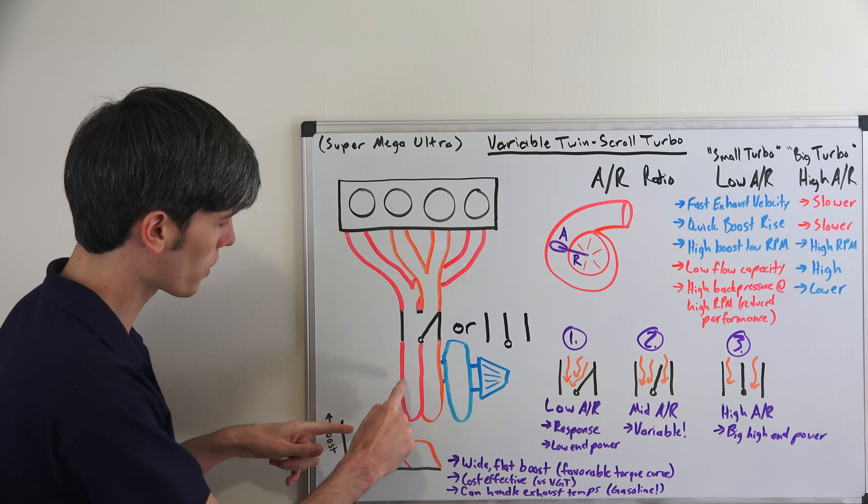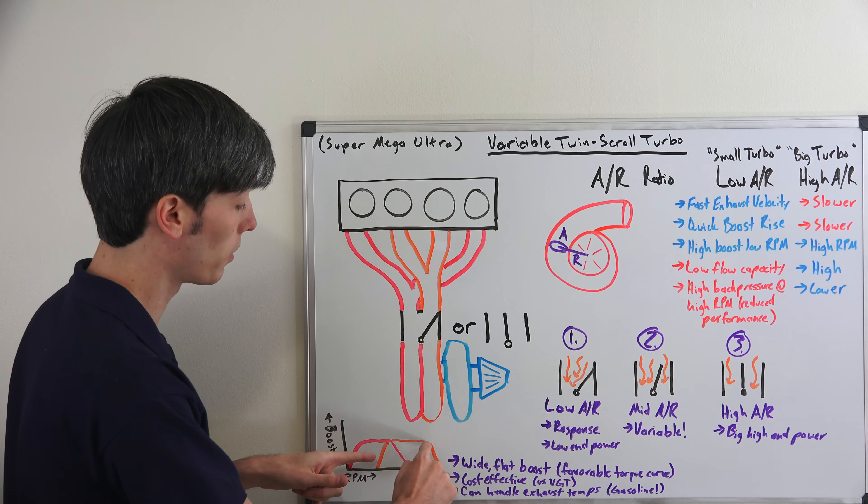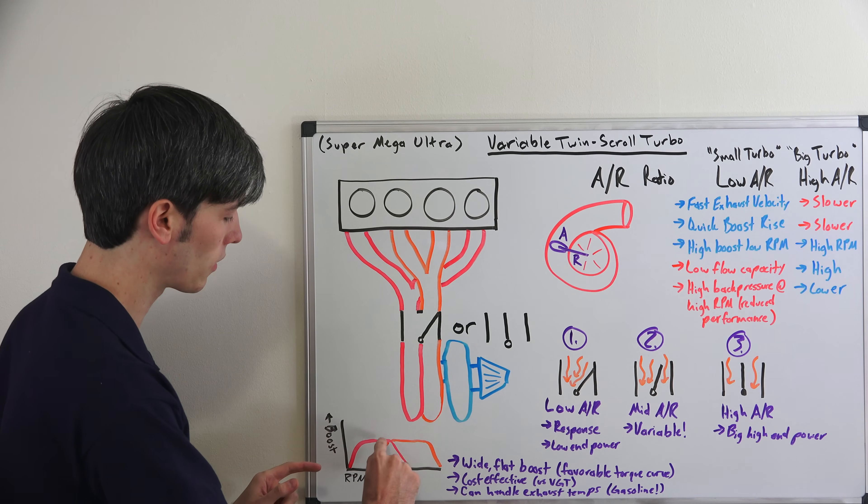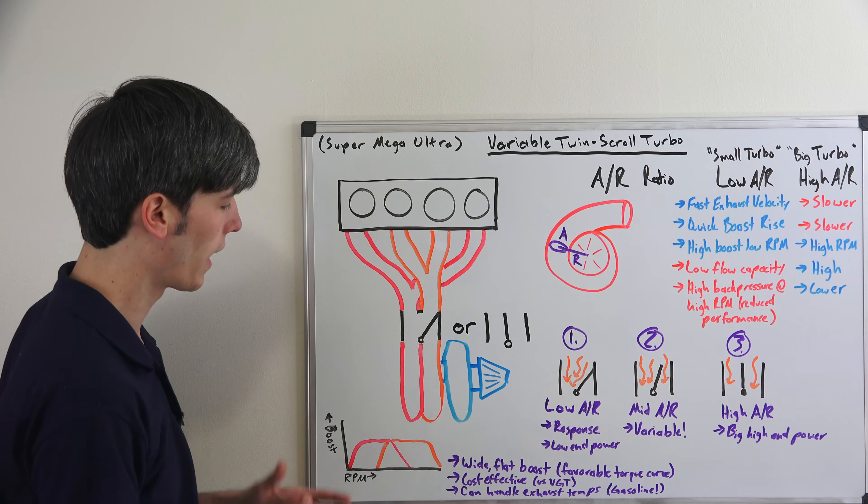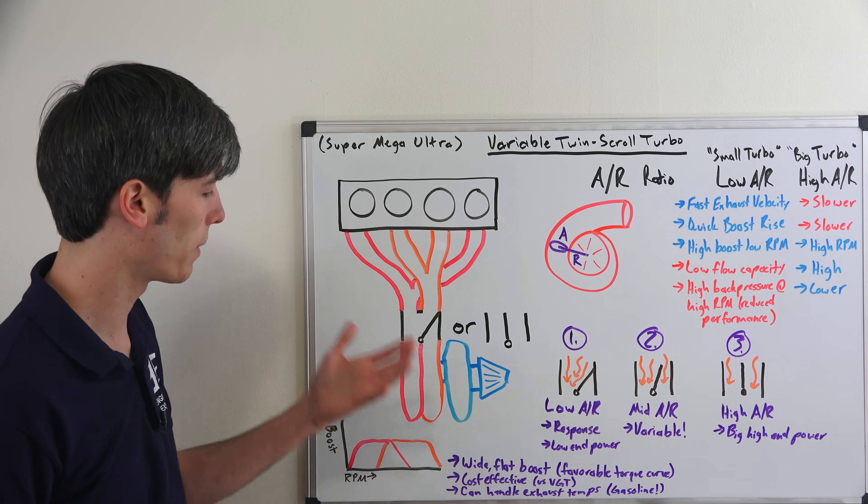If you were to just use the red scroll, you may be able to make power like this, and then if you were to use both scrolls you'd be able to make power like this. But when you combine them you have this long flat boost curve and that gives you a favorable torque curve. So that's great.